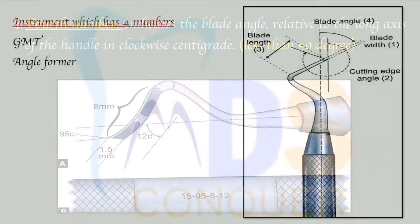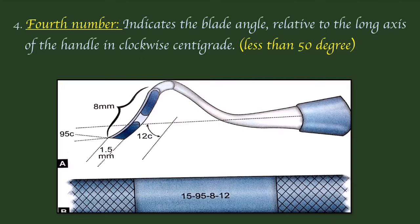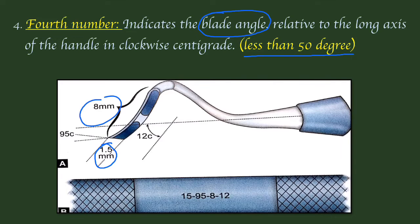The fourth number indicates the blade angle. This number will be less than 50 degrees, whereas the second number is more than 50 degrees. So the second number is the cutting edge angle (>50°) and the fourth number is the blade angle (<50°).